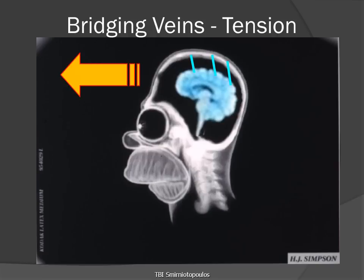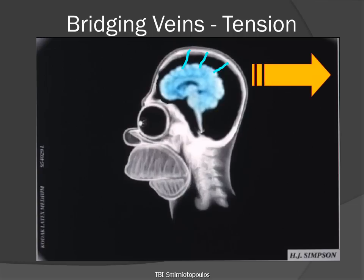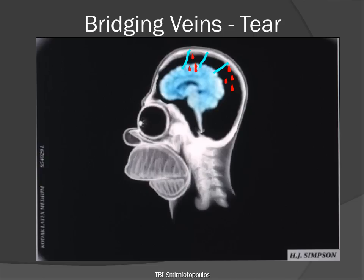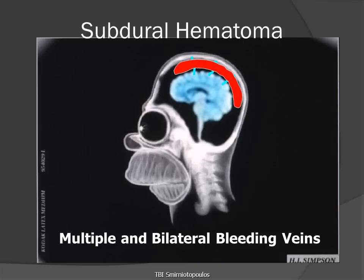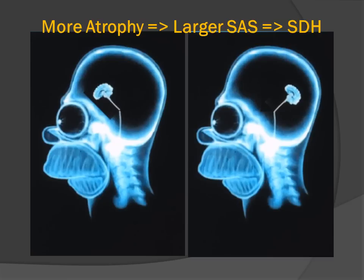We can also imagine that when we have a sagittal force, the skull may move first anteriorly and then posteriorly, stretching the bridging veins in both directions. The bridging veins tear not where they exit the brain, but where they enter the tough dural reflection that surrounds the superior sagittal sinus. And it's not one vein that bleeds, but multiple veins that bleed, and on both sides. So subdural hematomas may be bilateral, as opposed to epidural hematomas, which are classically unilateral lesions.